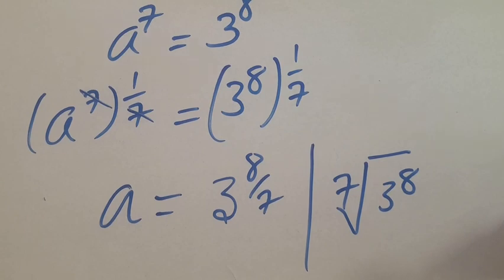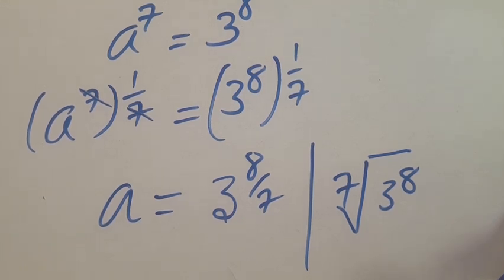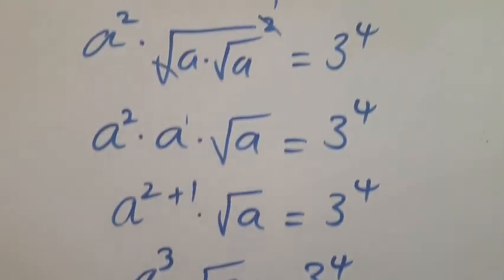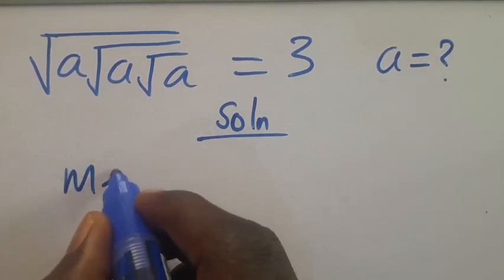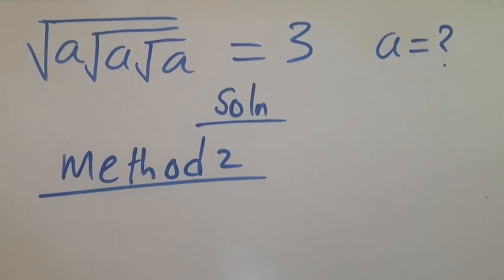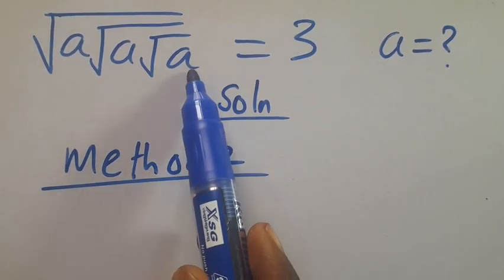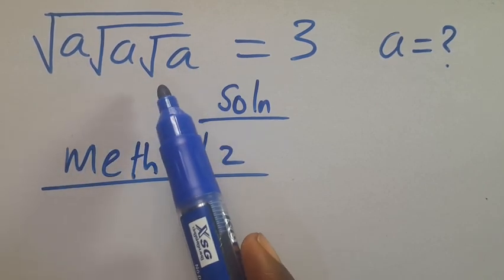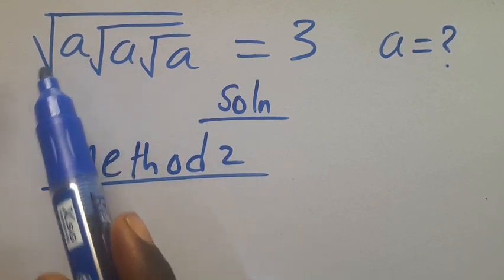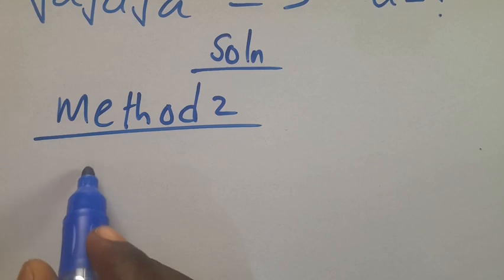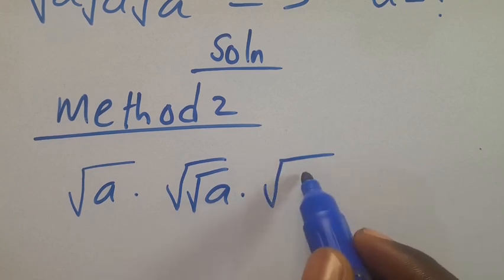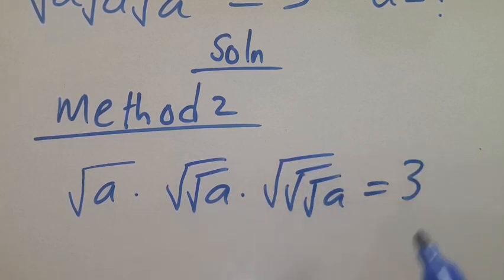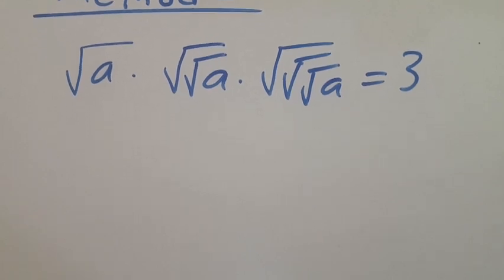If you are new here and find this interesting, don't forget to share, like, comment and subscribe for more math tutorial videos. Now let's check the second method. To apply Method 2, we note that the first a has one root, the second a has two roots, and the third a has three roots. So we write: root of a multiplied by root of root of a, multiplied by root of root of root of a, equals 3.